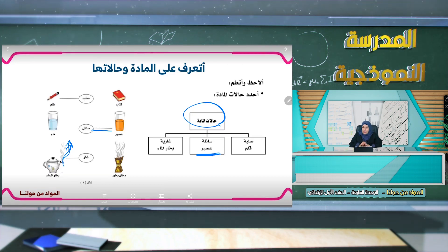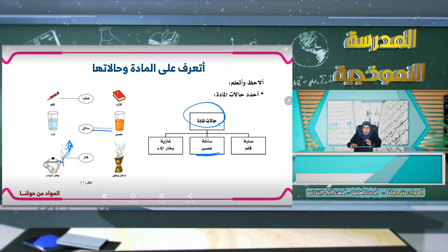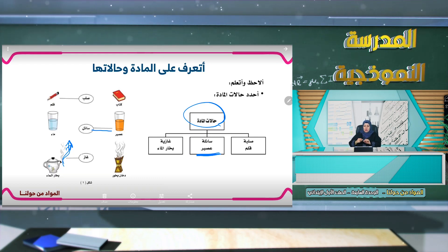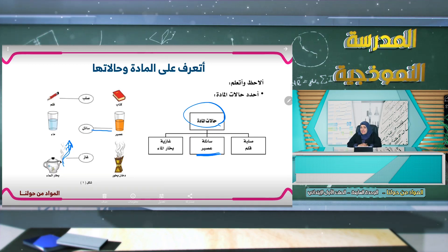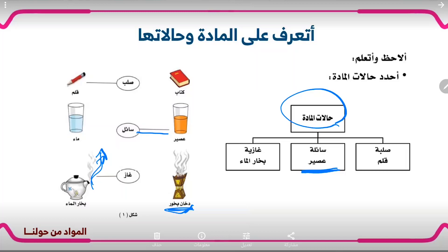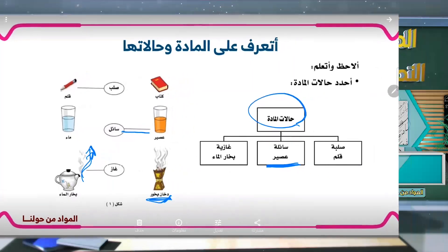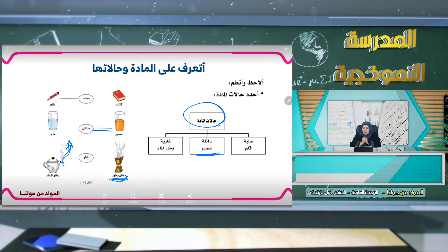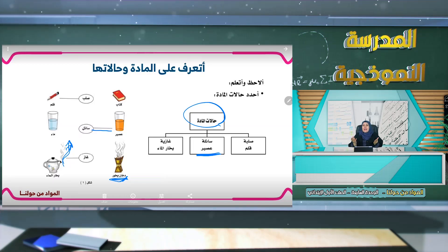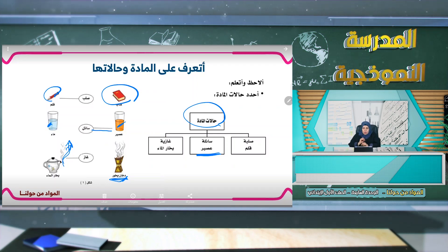عند غليان الماء يتحول إلى مادة غازية تسمى بخار الماء. وهذا الجهاز اللوحي مادة، وهذا الشال أو الحجاب مادة، وكل ما نستطيع تمييزه ولمسه مادة. والماء مادة، والتراب مادة، والكأس مادة، والكتاب المدرسي مادة، والمبخرة مادة، وحتى البخور مادة. أما البخار فهو مادة غازية لا نستطيع أن نمسكها بأيدينا. والقلم مادة والعصير مادة، يجب أن تفهم وتميز بين المواد جيداً لأنك ستحتاج هذا الدرس في الأعوام القادمة.